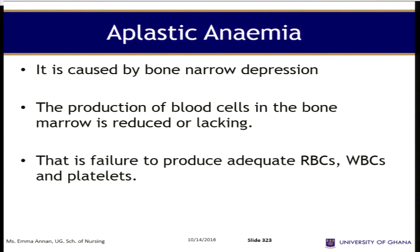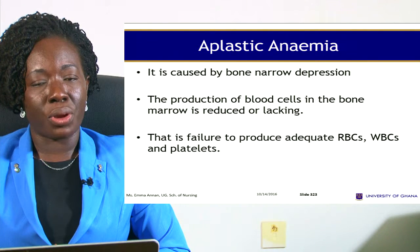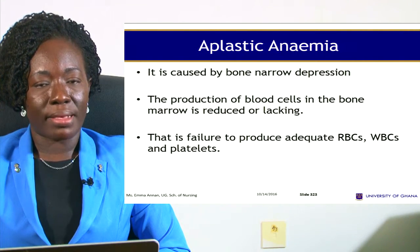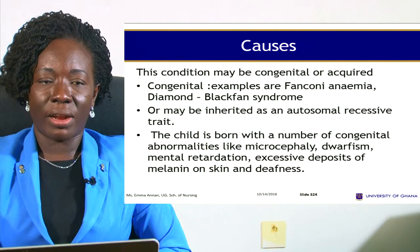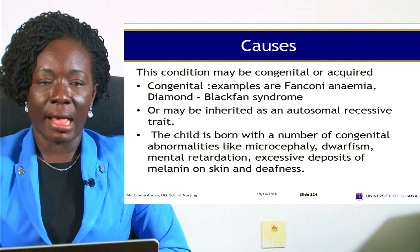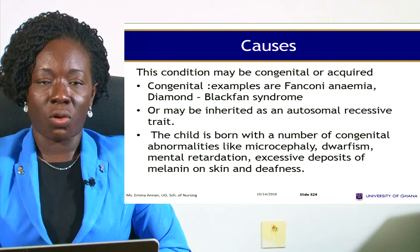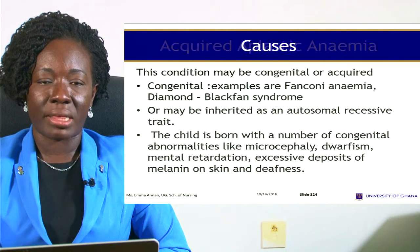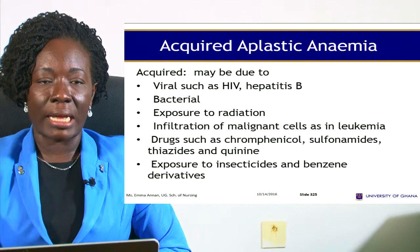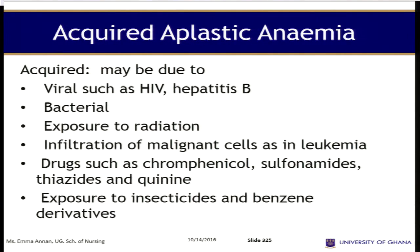Aplastic anemia is caused by bone marrow depression — production of blood cells in the bone marrow is reduced or lacking. There is failure to produce adequate red blood cells, white blood cells, and platelets. Causes include congenital forms inherited as an autosomal recessive trait, and acquired forms through infections such as viral infections like HIV, hepatitis B, or bacterial infection.